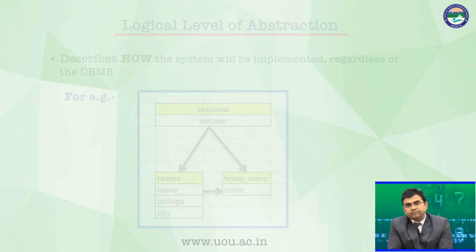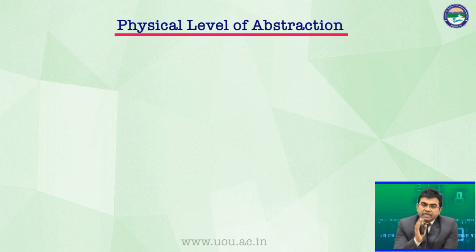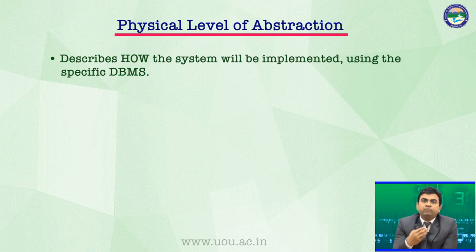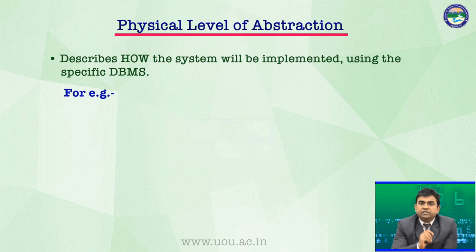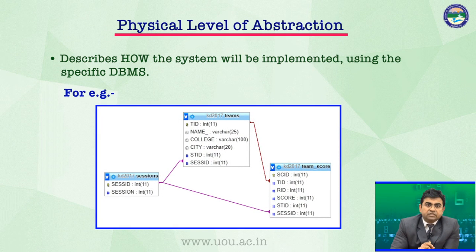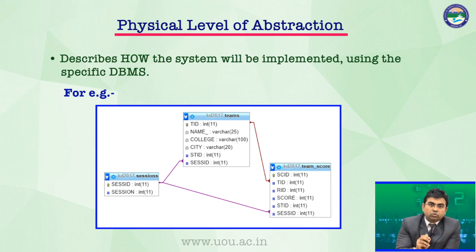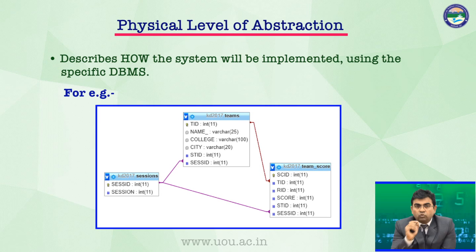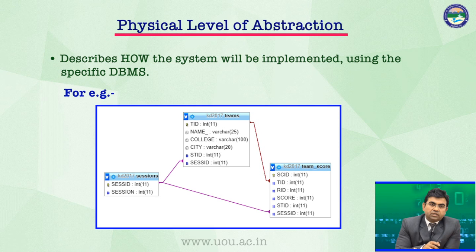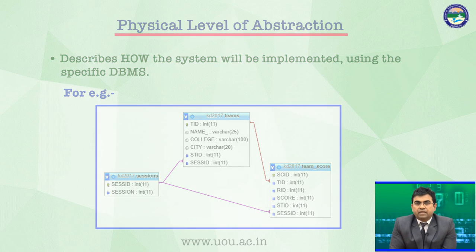इसको middle level भी कहते हैं. Physical level abstraction — यही same जो हमने logical में plan किया, उसको हमने implement कर दिया है किसी specific database में. यह जो implementation है यह MySQL का implementation है, जहां पर normalization करने के बाद plan किया कि कौन सा primary key बनेगा, किससे कौन relate करेगा, primary-foreign relationships होंगी, data types क्या होंगी, data type का size क्या होगा — that is called physical level abstraction. These are called three levels of abstraction.